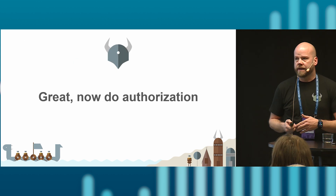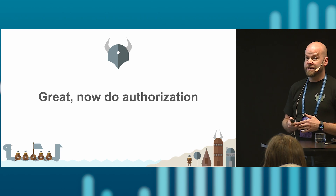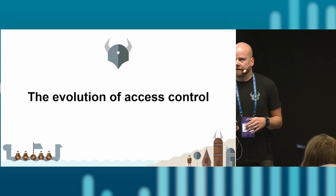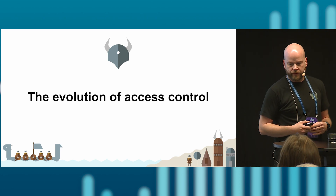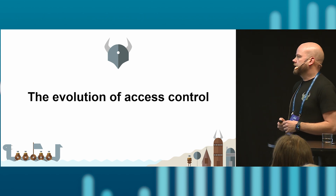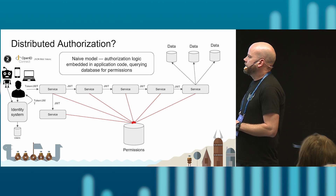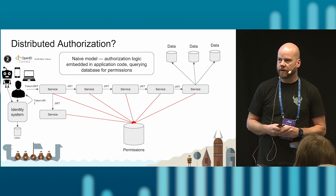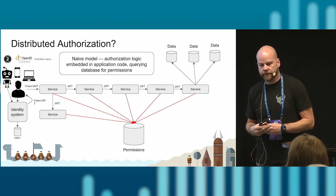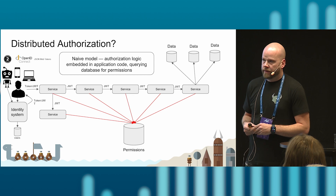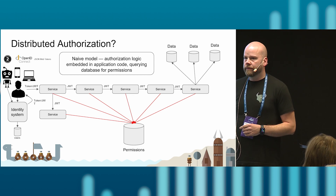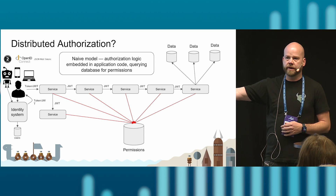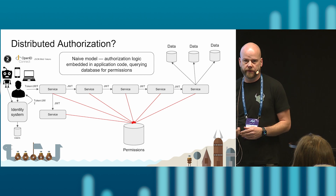That was, however, the easy part. If we try to look at what the evolution for access control might look like — the most obvious problem is the same one we had for identity. We don't want to query a database: we now know who the user is, but we don't know what they're allowed to do. We could go to a database and ask, but again, at scale this is a problem. So the first question is: where do we do authorization?